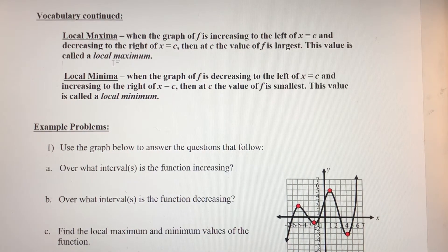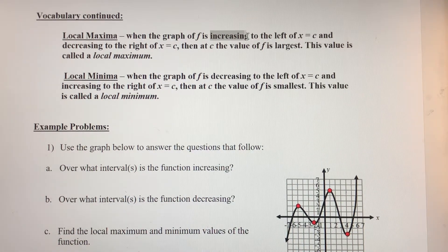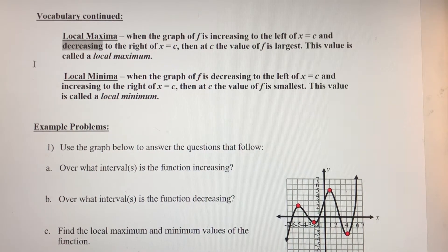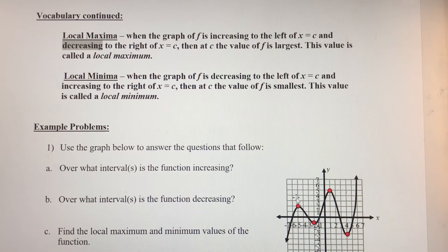A local maximum value occurs when a function goes from increasing to decreasing. You can read over the full definition, but basically that's what happens — a maximum value is going to occur at a peak.